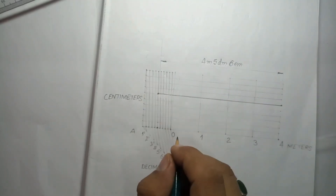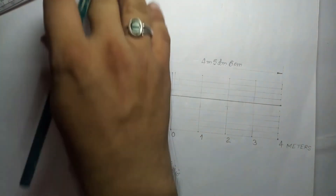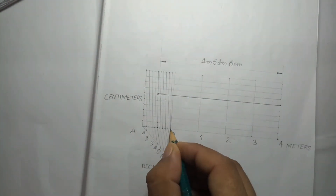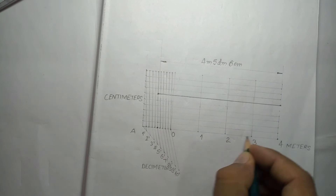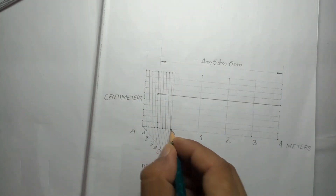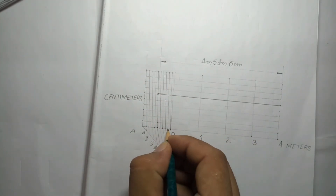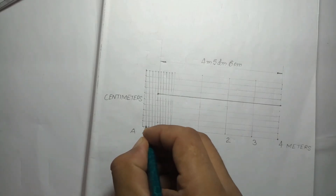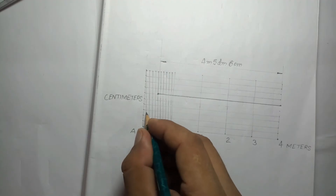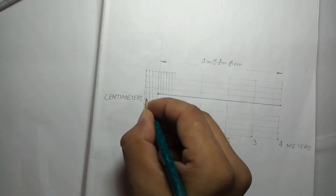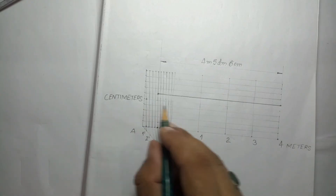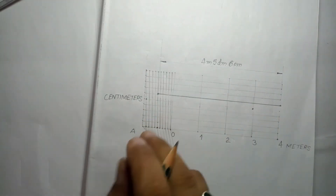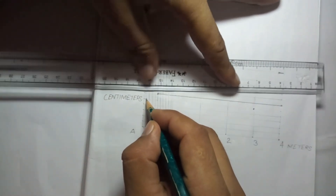Second value: 3.95 meters. From zero, go 3 to the right side, then 9 divisions on the decimeter side (1 through 9), then 5 upward. Mark that point — from this point to this other point is the value 3.95.